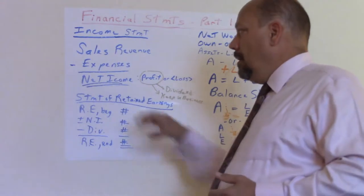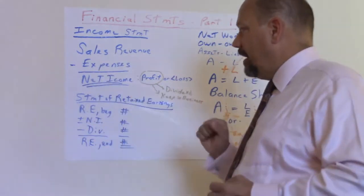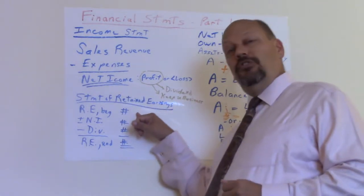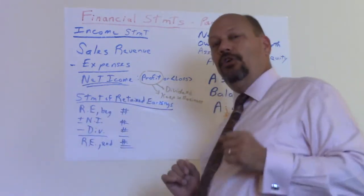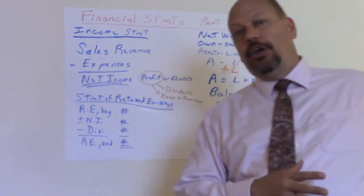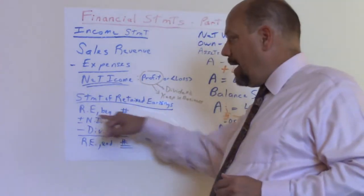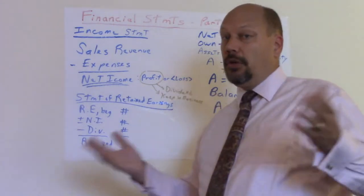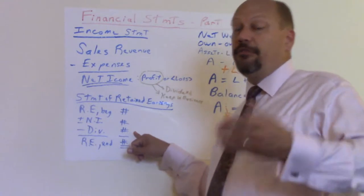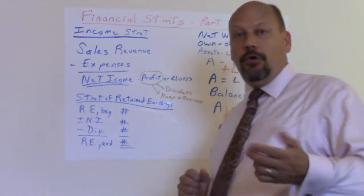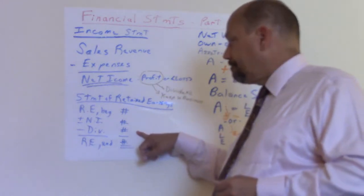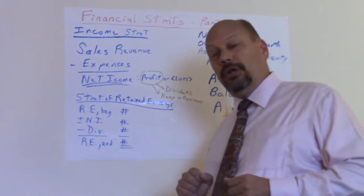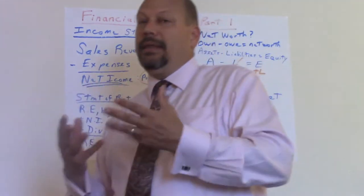Net income and dividends or retained earnings lead into the very next statement: the statement of retained earnings — the earnings from the business that you keep. You start with beginning retained earnings, which are earnings from all prior years. Then you add or subtract net income: add if it's a profit, subtract if it's a loss. Then subtract any dividends paid out to owners or shareholders. Beginning retained earnings, plus or minus net income, minus dividends, gives you ending retained earnings.